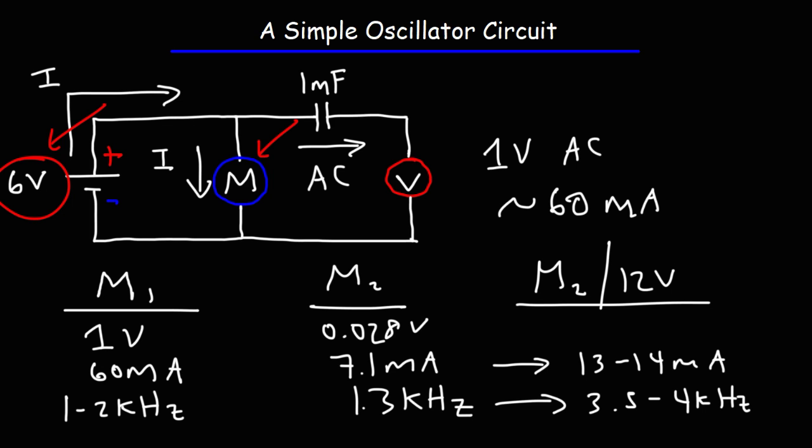So, increasing the voltage of the battery caused the motor to spin at a higher rate, and so, we got a higher current output, and a higher frequency at the output as well.